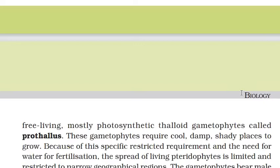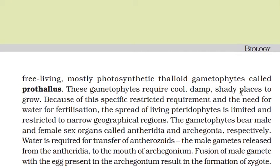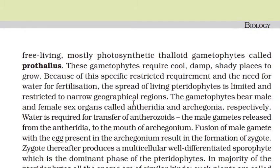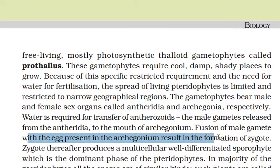In the gametophyte, you will find male and female sex organs. The male sex organs are called antheridia and the female sex organs are called archegonia. When the mouth of the archegonium opens, the male gametes from the antheridia fuse with the female reproductive part.